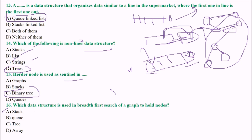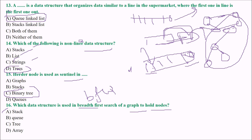Next: which data structure is used in breadth first search of a graph to hold nodes? There are two types of graph searching: breadth first search and depth first search. The answer is Queue — we use a queue to hold nodes in BFS.